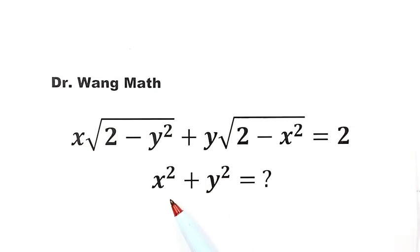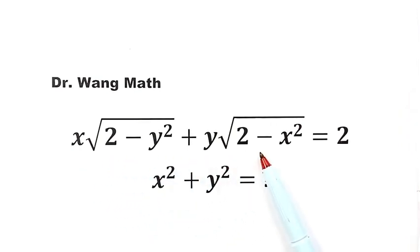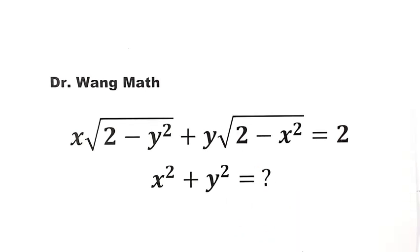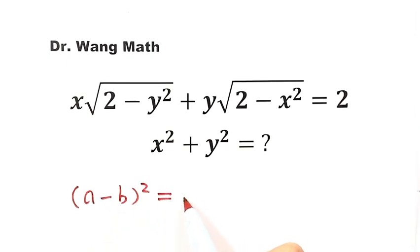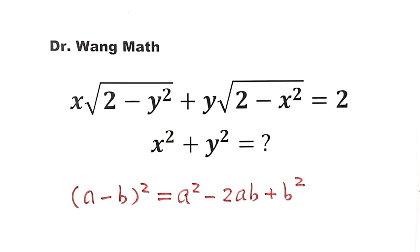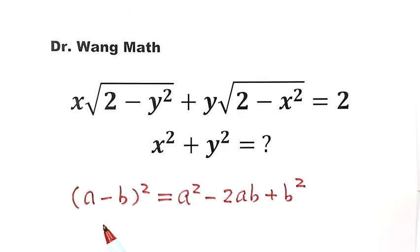Because here we have x squared plus y squared, and here we have a product of two terms, and here we have a product of two terms, we think about using the formula (a minus b) squared equals a squared minus 2ab plus b squared. In order to have the negative 2ab cross term for this given equation, we multiply both sides by negative 2.